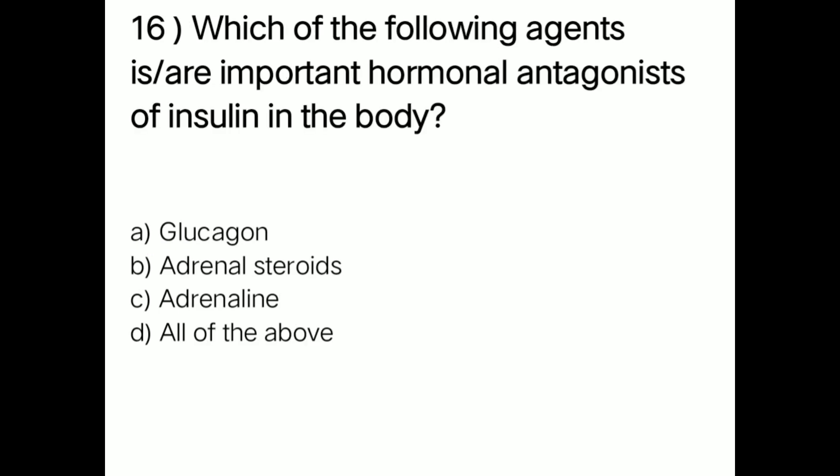Next question: which agents are important hormonal antagonists of insulin in the body? Option A: glucagon; option B: adrenal steroids; option C: adrenaline; option D: all of the above. Right answer is option D — all of the above. Glucagon, adrenal steroids, and adrenaline are all important hormonal antagonists of insulin in the body.